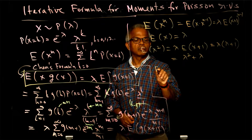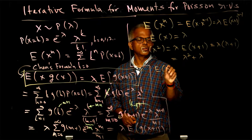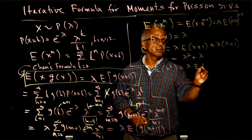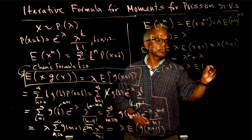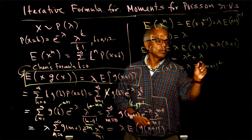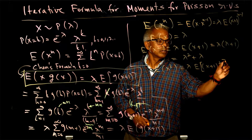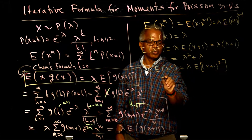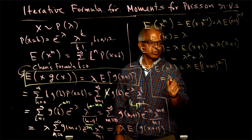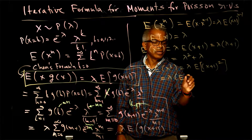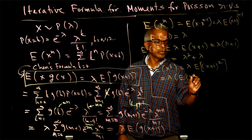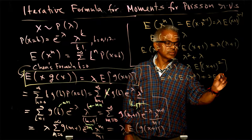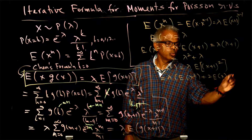The expected value of x cubed is going to be lambda multiplied by the expected value of (x+1)^2. If I expand (x+1)^2, this comes out to be the expected value of x squared plus 2 times the expected value of x plus 1.